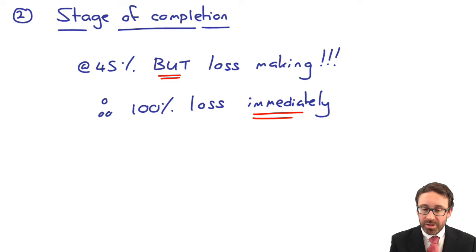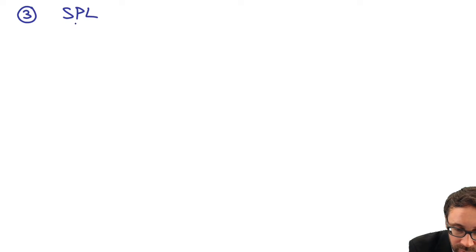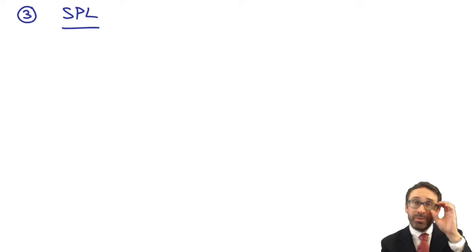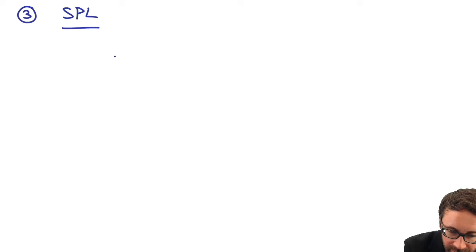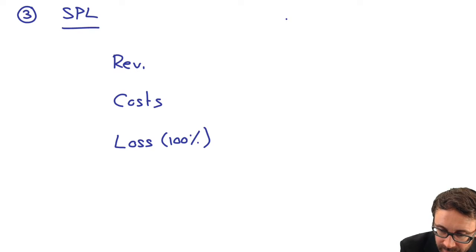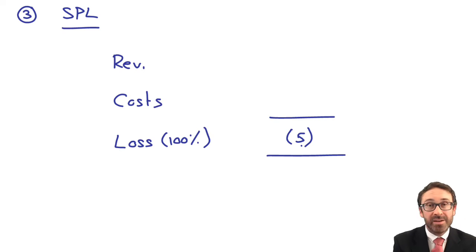If we're going to go through and have a look at what happens in the statement of profit or loss, I've made this example just a little bit easier for yourselves, given that it's the first year of the contract. What we're looking at are the revenues, the costs, and the loss. Remember, the loss is at 100%. That loss that we've made is 5.